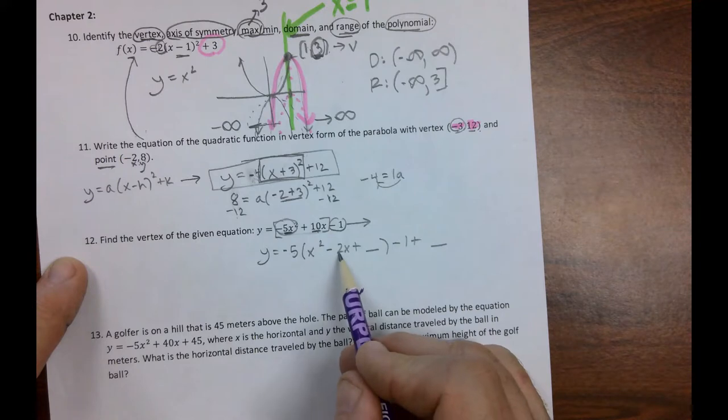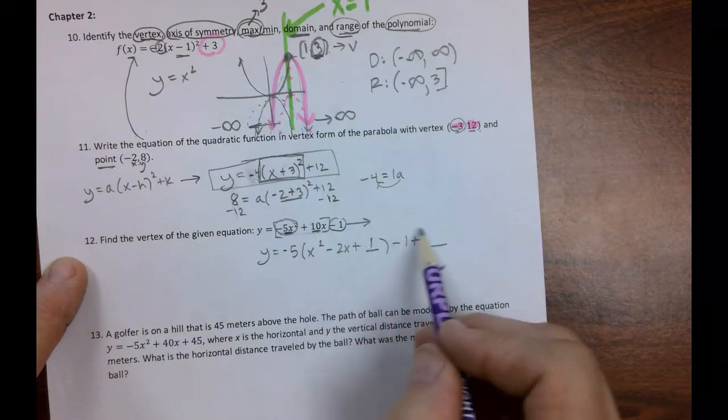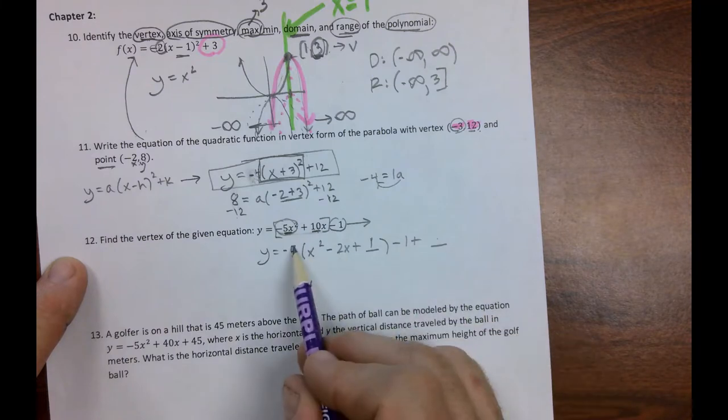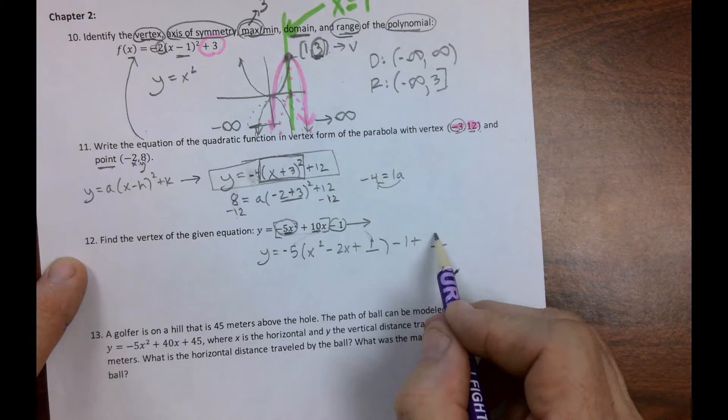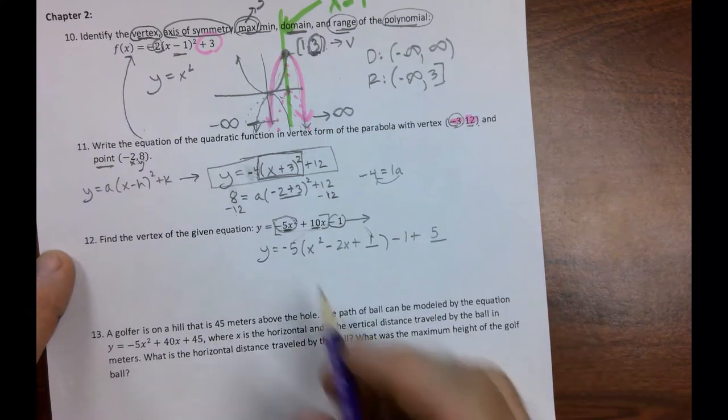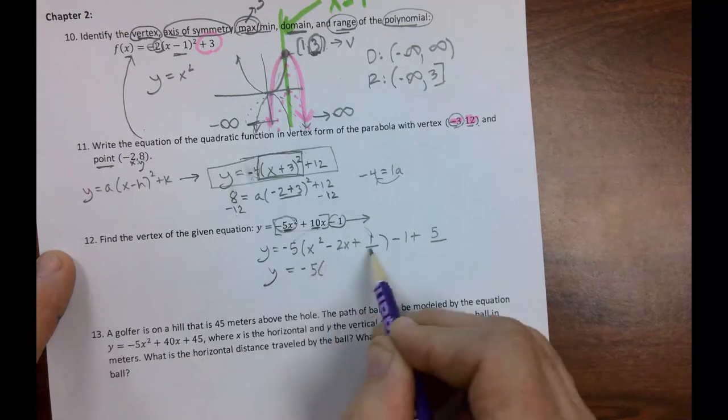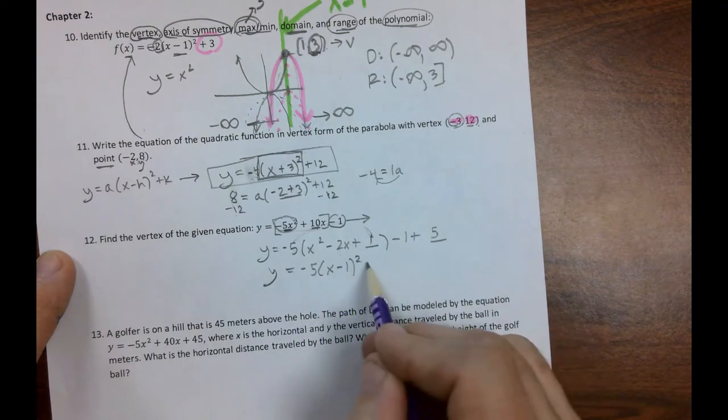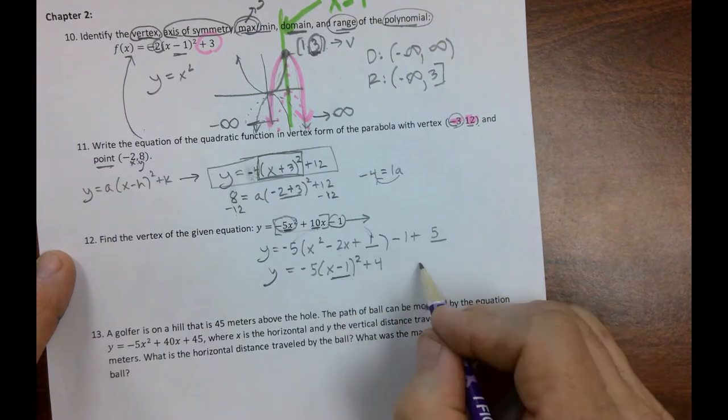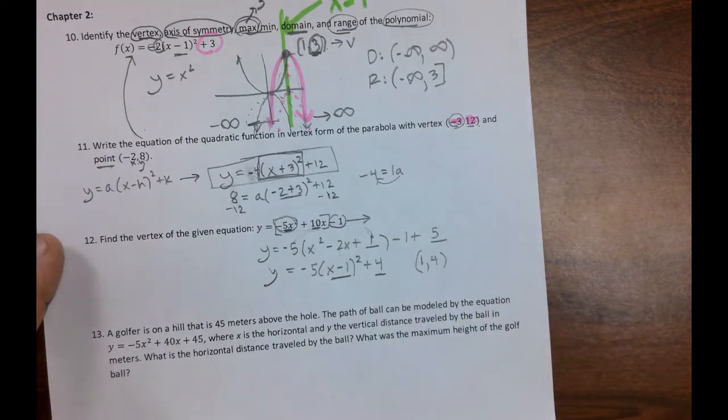Take half of that. Negative 1. Square it. 1. Before we just put a negative 1 here, we've got to use our noggin. Negative 5 times 1 is negative 5. So we actually have to put a positive 5 there. So now we have y equals negative 5. Perfect square trinomial factors into (x minus 1) squared plus 4. So where's the vertex? Right 1 up 4. And there's how you do that.